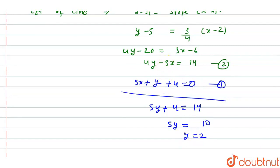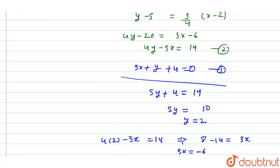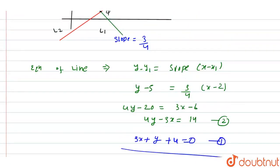If we put the value of y in equation 2, we get 4(2) - 3x = 14, so 8 - 14 = 3x, giving us 3x = -6, and x = -2.